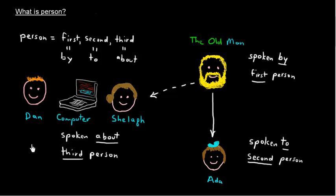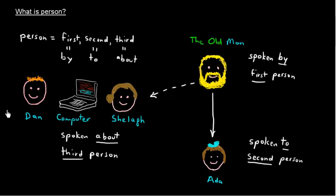In English, adjectives, adverbs, prepositions, and conjunctions do not have the characteristic of person. Some languages do, but not English. So pronouns, verbs, and nouns are all relevant — and nouns are always third person.